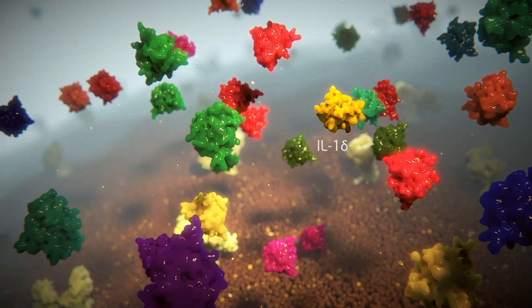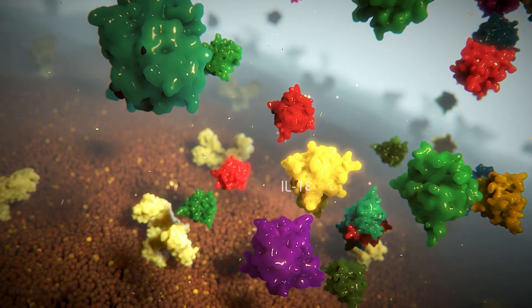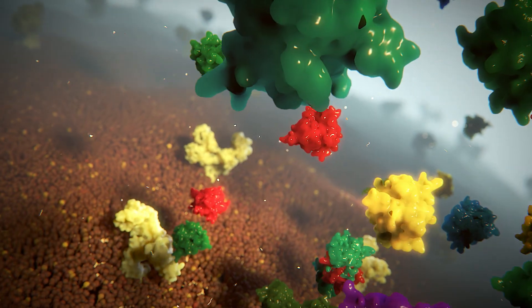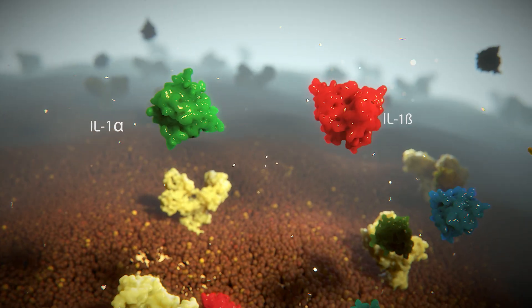Interleukin-1 actually refers to a family of cytokines comprising 11 different isoforms, though most is known about interleukin-1-alpha and beta, in part due to their strong pro-inflammatory role.